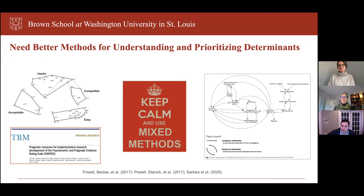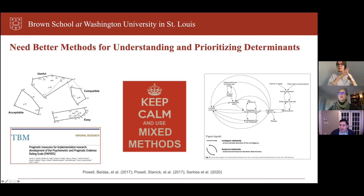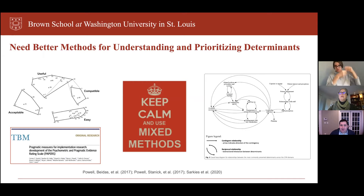I want to stress the importance of understanding dynamic relationships between barriers. Models like CFIR do a great job comprehensively laying out barriers but don't always describe relationships between them. Some have proposed causal loop diagramming — from a paper by Sarkeys and colleagues just published in Implementation Science — where they conducted a systematic review to identify barriers to implementation and used causal loop diagramming to present relationships between determinants as represented in CFIR.